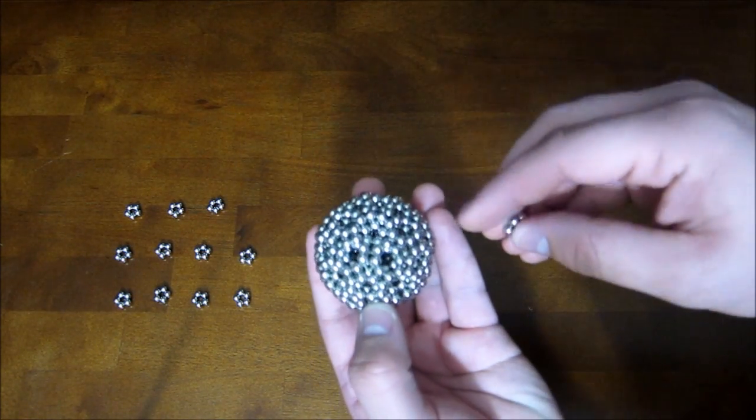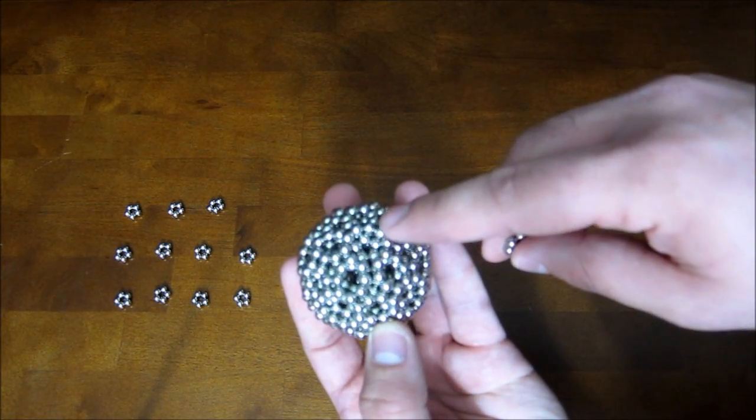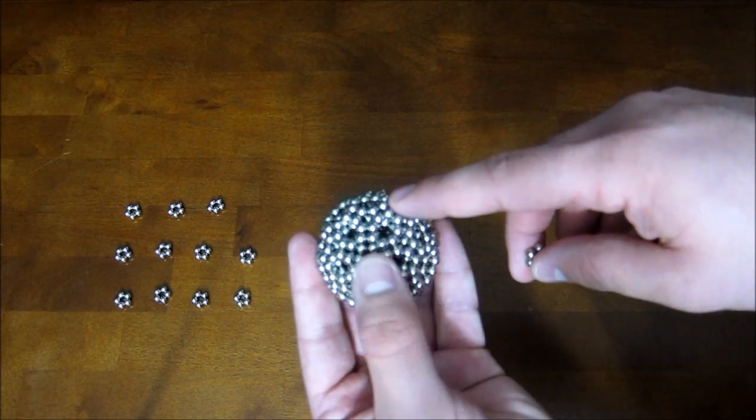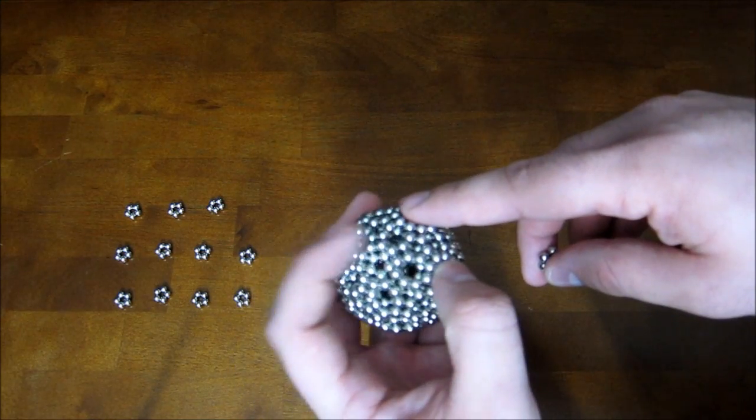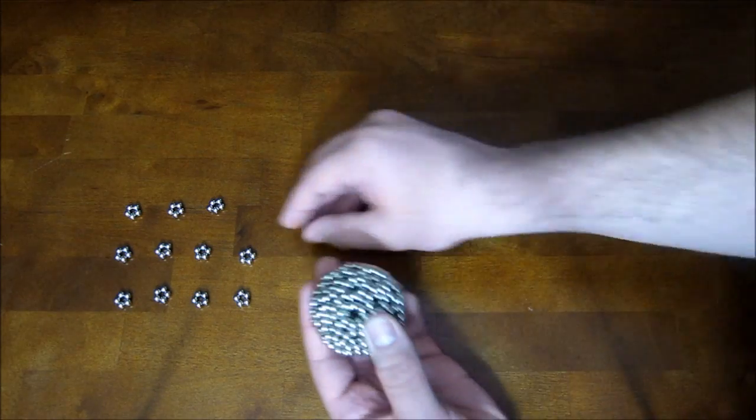But if you want to get to the exact shape that I had in the channel, then you would take 12 pentagons and put one on each of these points here where five of the subunits come together. So just like that and do that on all 12 corners.